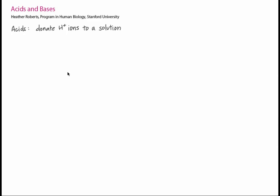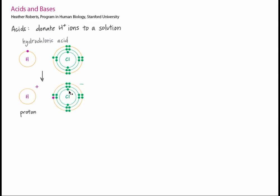When placed in water, some molecules and compounds release H-plus ions into the water. These are acids. For example, think about hydrochloric acid, made of hydrogen and chlorine. These atoms form ions through electron transfer. Hydrogen transfers one electron to chlorine, resulting in full valence electron shells for both ions. When hydrogen loses an electron, it now only has a proton because hydrogen has no neutrons. So H-plus is often referred to simply as a proton.